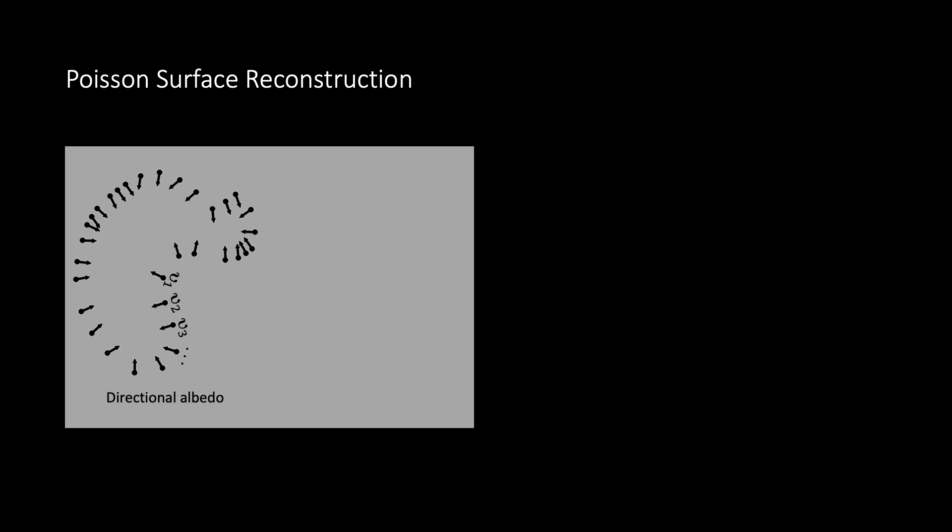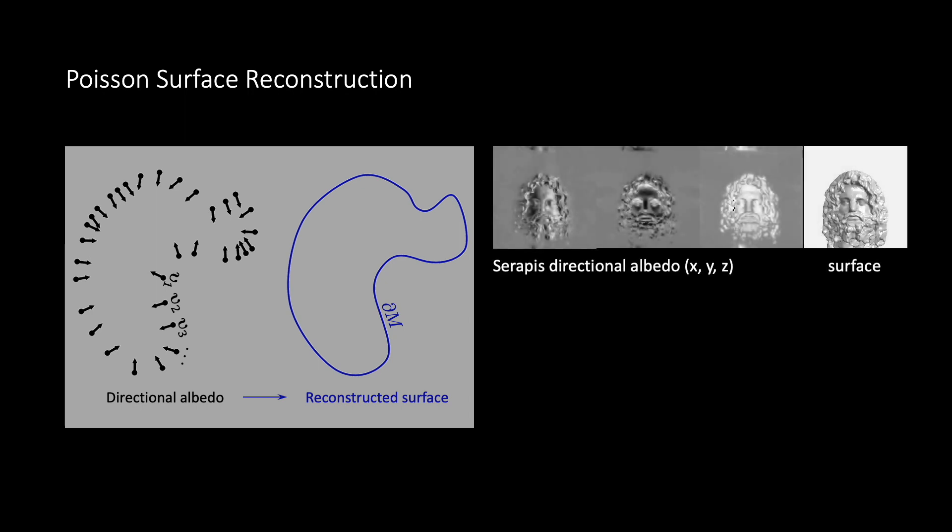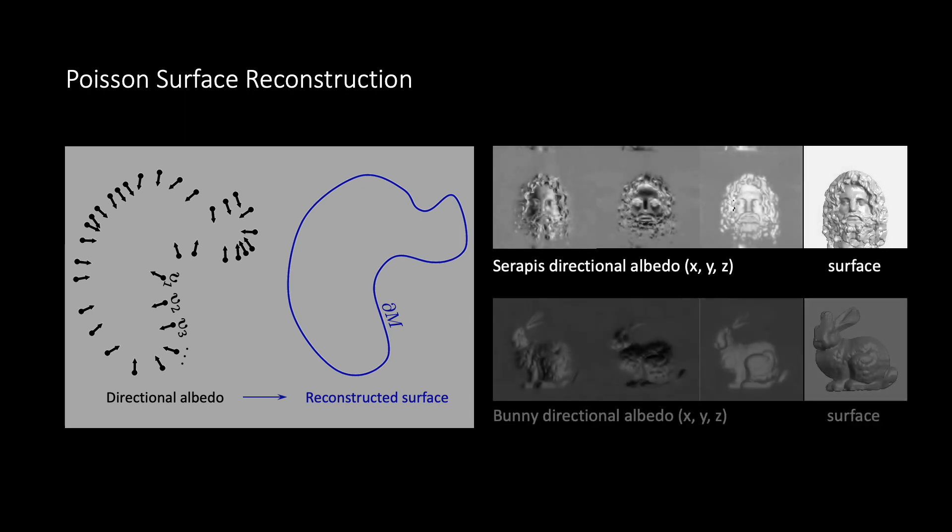Having recovered the directional albedo, we reconstruct the hidden scene surface by fitting a manifold onto the recovered normals. Here we show the surface fitted on the simulated Serapis and bunny scenes.